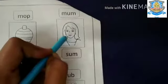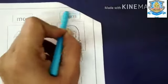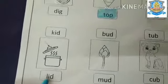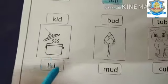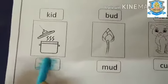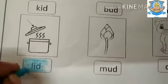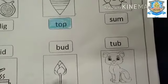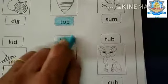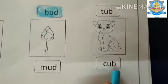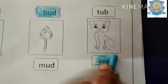Next is mum: M-U-M — mum. We color the mum box. Okay, now next is lid: L-I-D — lid, meaning a cover. So we find the lid box which has L-I-D written. Next is bird — so we color the bird box. Next picture is cub: C-U-B — cub. So we color the cub box.